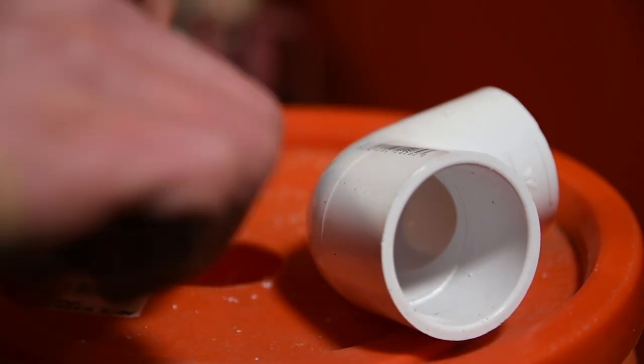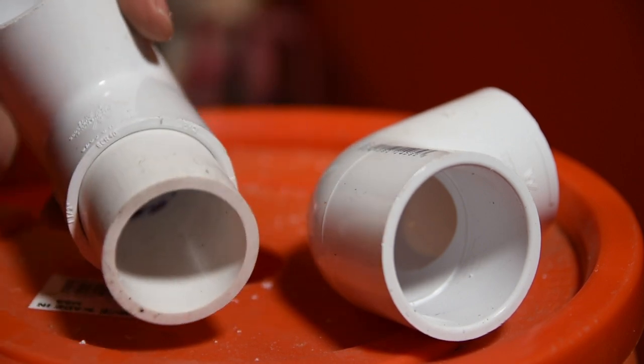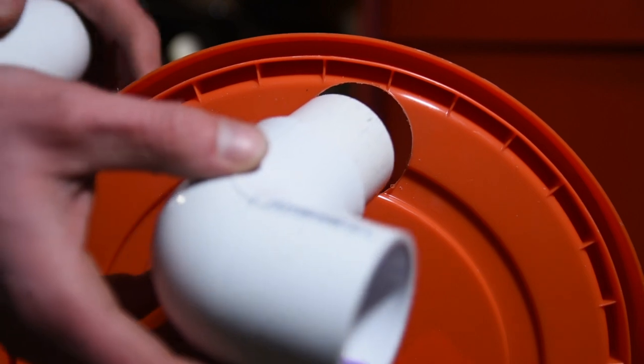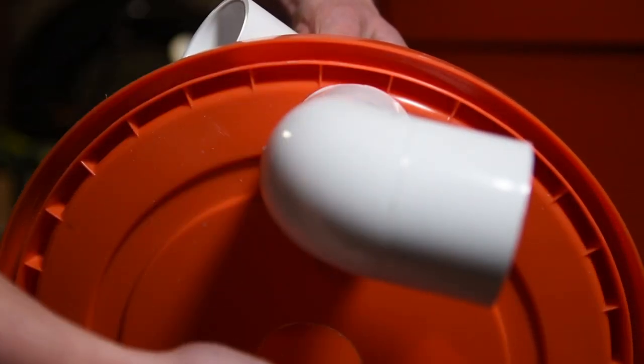Insert a section of PVC pipe into the elbow and twist it as you push it in. This piece is going to go on the bottom of the bucket lid, with the opening facing towards the side of the bucket, so that way the ash spins around the outside of the bucket and away from the part attached to the shop vac.